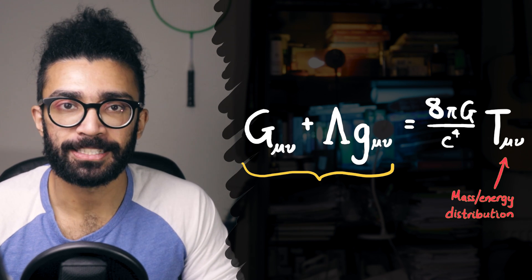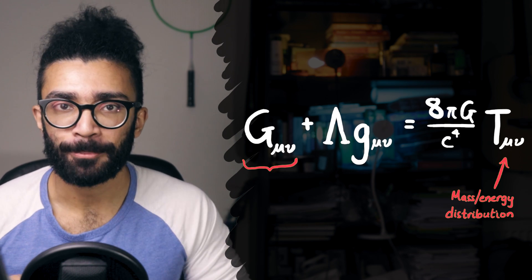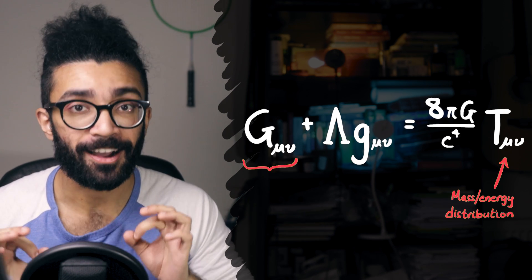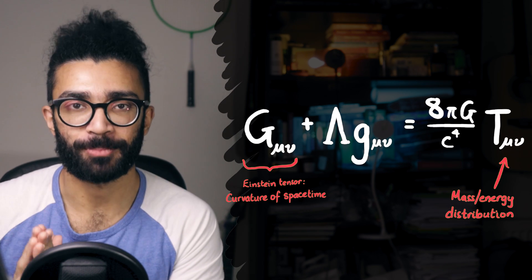If T mu nu, the stress energy tensor, contains information about how stuff is distributed throughout spacetime, the tensor capital G mu nu, known as the Einstein tensor, contains information about the curvature of that spacetime fabric.